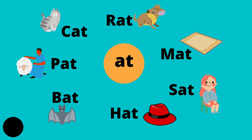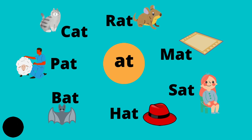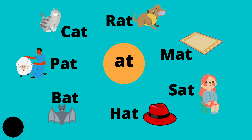Three-letter words that end with a T: cat, rat, pat, bat.